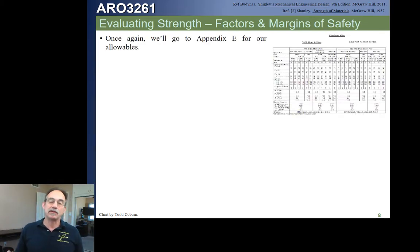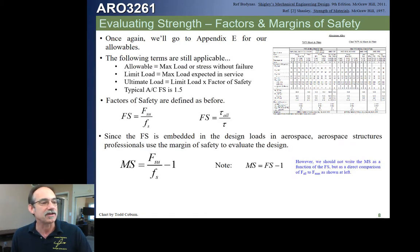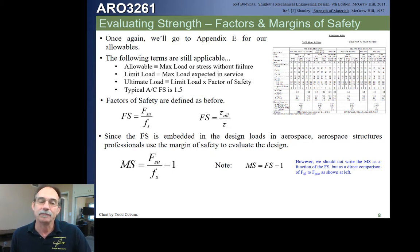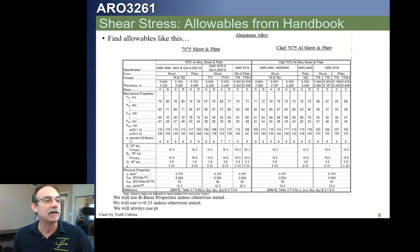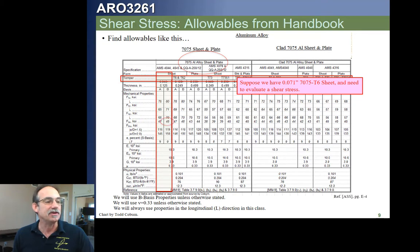To evaluate shear stresses after calculating them via direct shear, we need FSU — the ultimate shear allowable. We go to Appendix E, just as we did for normal stresses. The margin of safety equation is FSU divided by the calculated ultimate shear stress fs, minus one. For example, for 7075-T6 aluminum at 0.071-inch thickness, using B-basis, FSU equals 48,000 PSI.